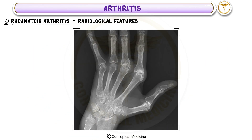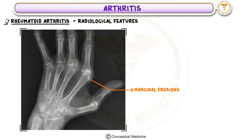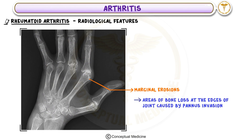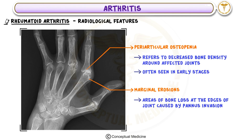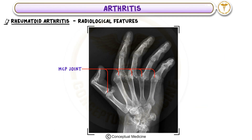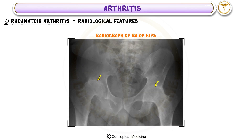Radiological Features of Rheumatoid Arthritis: Marginal erosions are areas of bone loss at the edges of the joint caused by pannus invasion. Periarticular osteopenia refers to decreased bone density around the affected joints, often seen in early stages. Among all joints, the metacarpophalangeal joint is the most commonly affected in rheumatoid arthritis, making it an important area to focus on during clinical examination and imaging.